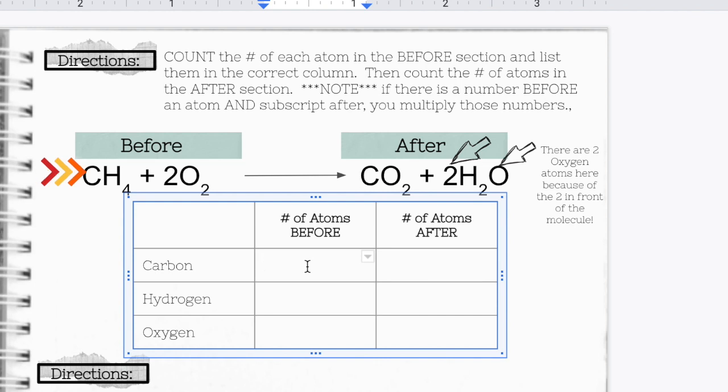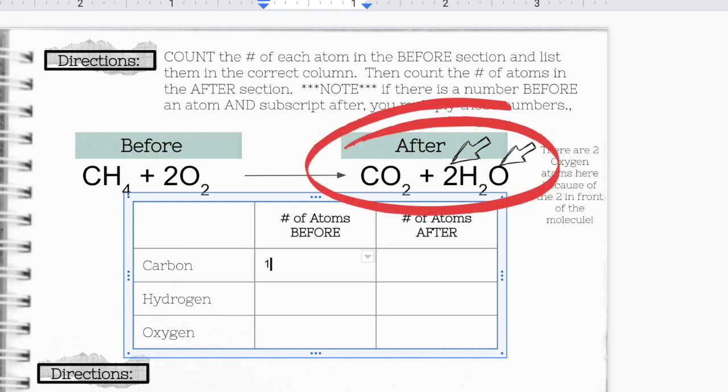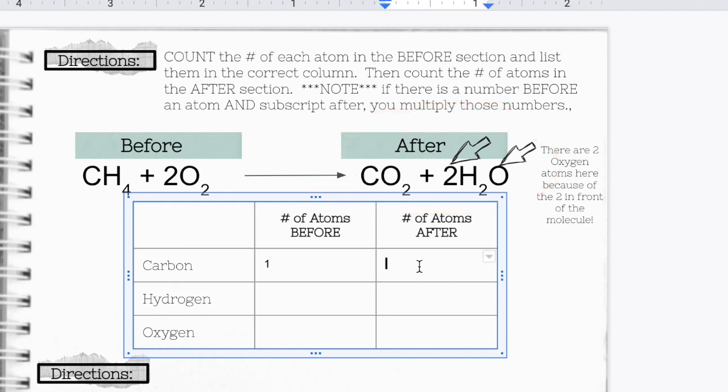So if you look right here, you can see that we have one C, which is carbon. And in my chart, I'm going to type a one because there's one carbon in the beginning of this chemical reaction. Now I'm going to look at the after side of the reaction, and I can see that there is also one C in this after side of the reaction, so I'm going to type that in my chart as well.